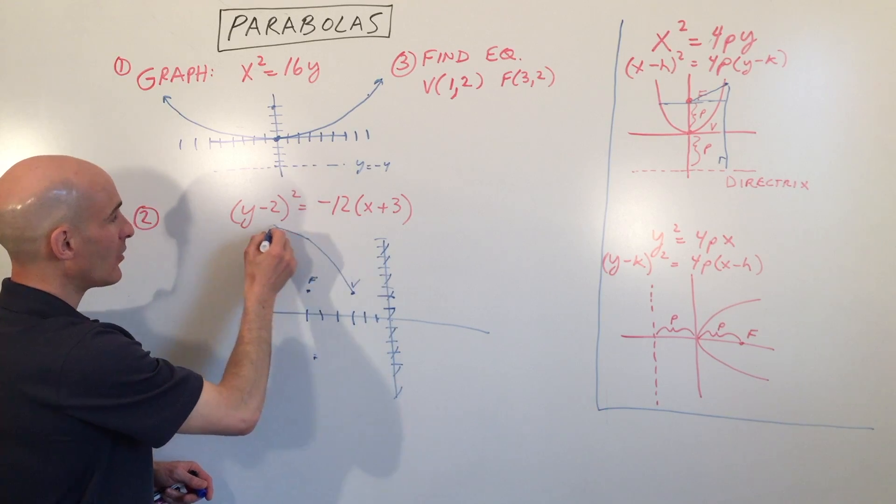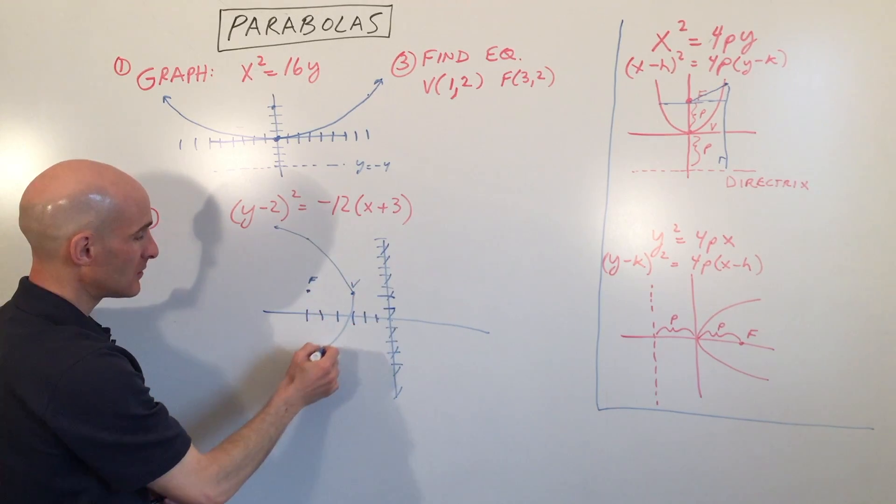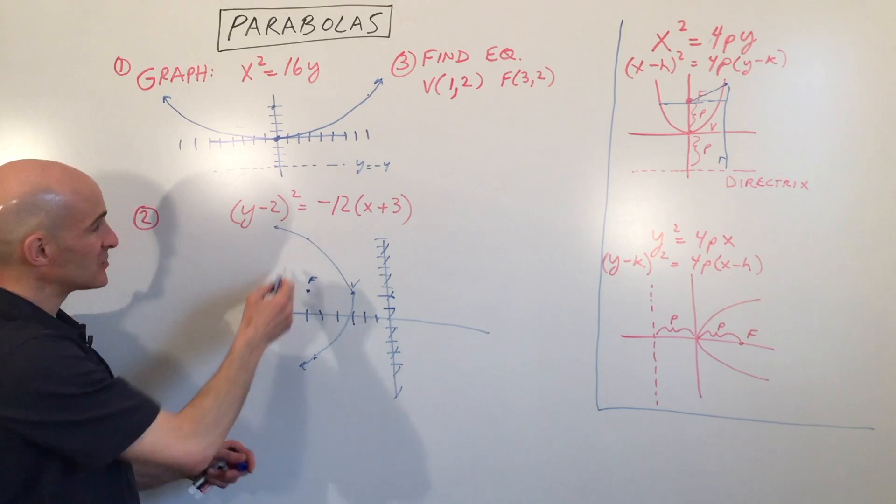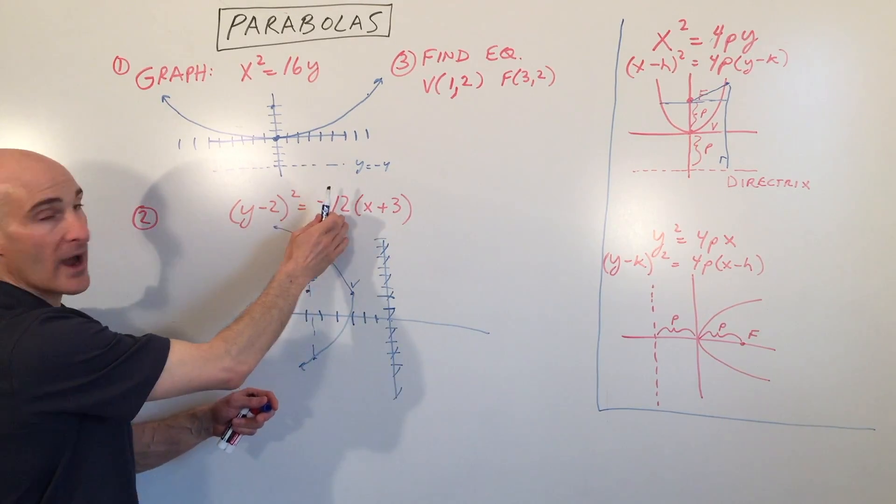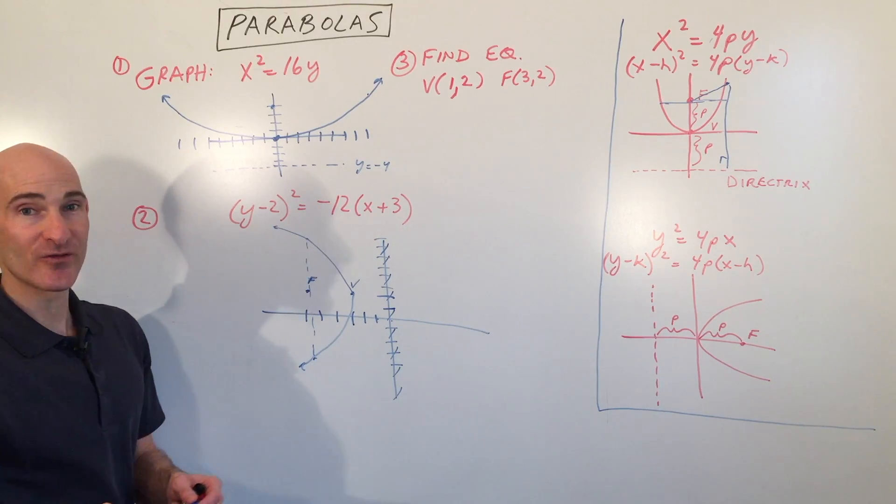So that gives me an idea about how wide to draw the parabola. So again, this distance right here is 4p wide, 12 wide. So far so good.